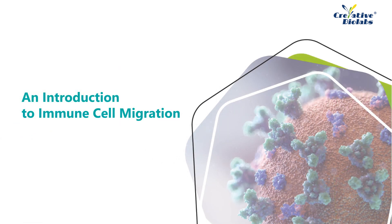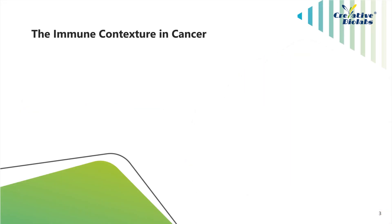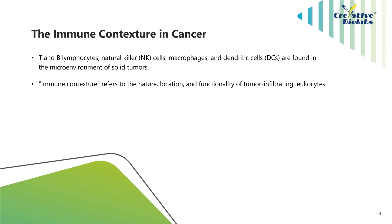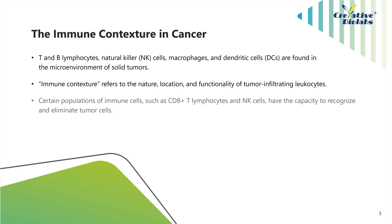Before jumping into how immune cell migration can be targeted by immunotherapy, let's talk about the immune contexture in cancer. Immune cells such as T and B lymphocytes, natural killer cells, macrophages, and dendritic cells are found in the microenvironment of solid tumors. The nature, location, and functionality of tumor-infiltrating leukocytes are referred to as immune contexture. Immune cells can be either anti- or pro-tumorigenic.